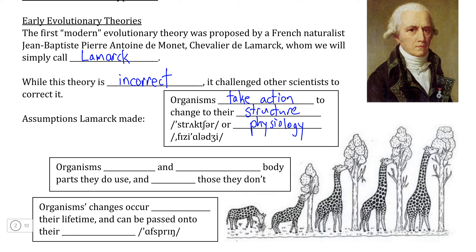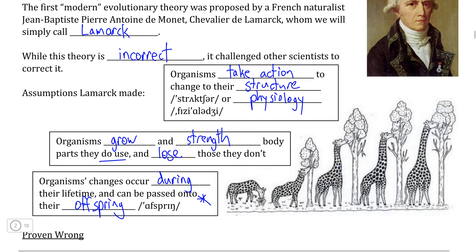Lamarck proposed that since these changes occurred during the organism's lifetime, they could also be passed on to their offspring — and this was the key characteristic that was proven wrong. It was, at least on the surface, completely understandable why Lamarck made this conclusion. For example, if we take a look at the giraffe here, the act of stretching up to reach the leaves on taller trees, Lamarck believed, would over time lead to the neck growing longer in order to allow the giraffe to reach higher parts of the tree and out-compete less vertically gifted organisms. However, this characteristic is not necessarily passed on to an organism's offspring.